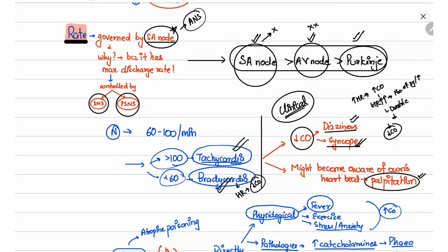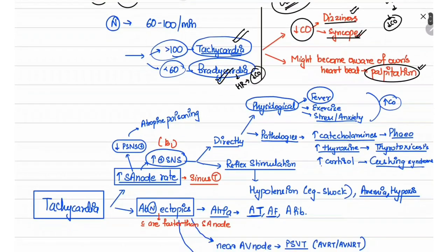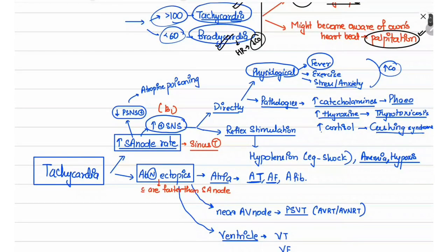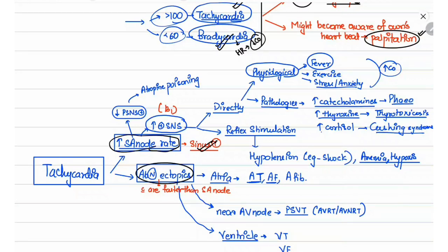Now let's look at the different causes of tachycardia and bradycardia. Tachycardia occurs when the rate is more than 100, and it can occur either because the SA node discharge rate is increasing, or because there is an ectopic focus within the heart discharging at a higher rate than the SA node. If tachycardia is due to increased SA node discharge, it is known as sinus tachycardia. If it is due to an abnormal ectopic, different names apply depending on the location of the ectopic.